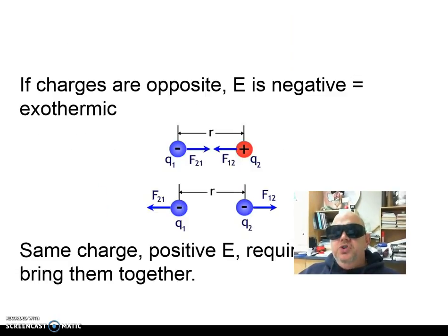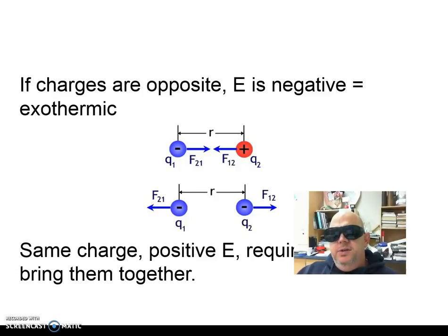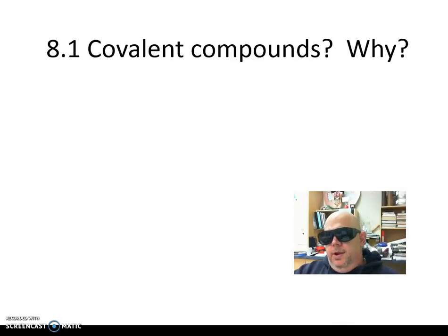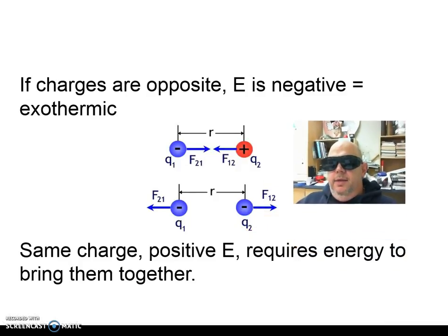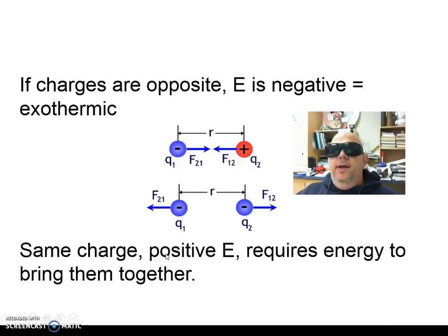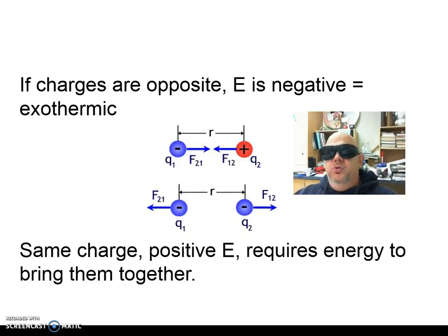If the charges are opposites, the energy E is going to be negative, and that tells us it's going to be an exothermic process. On the other side of the coin, if you have the same charge, you have a positive E, and that requires energy in order to bring them together. So once again, when we talk about Paula Abdul, you may remember that opposites attract.